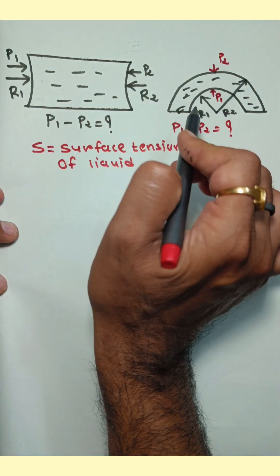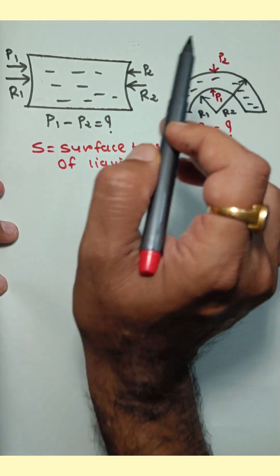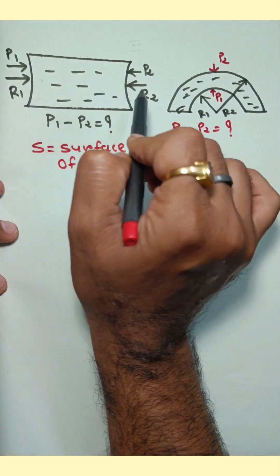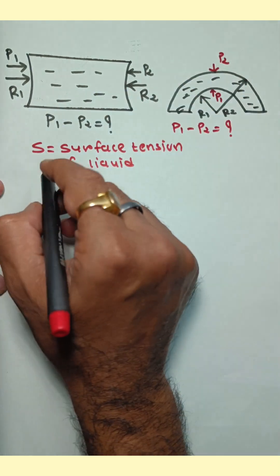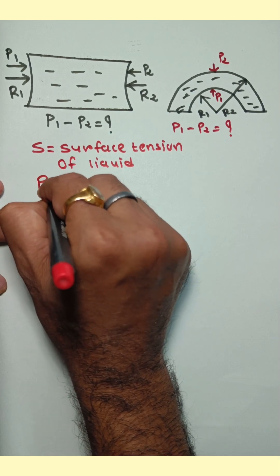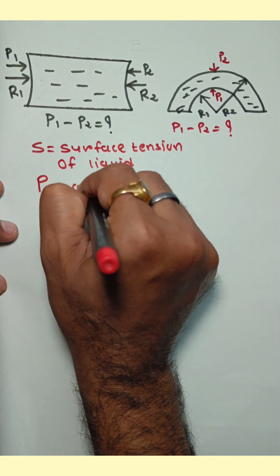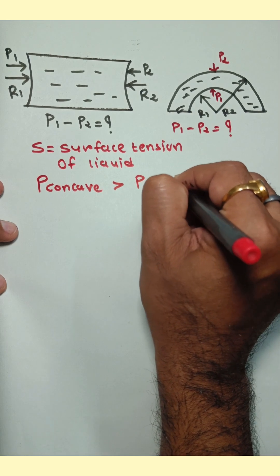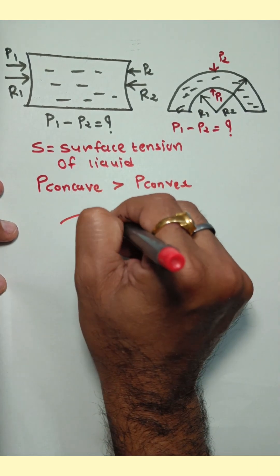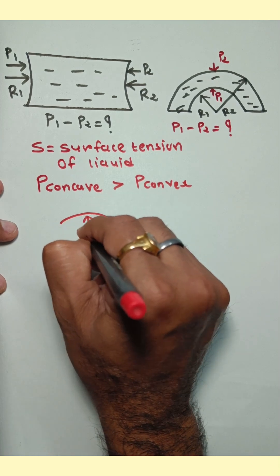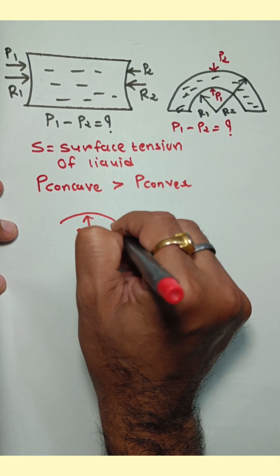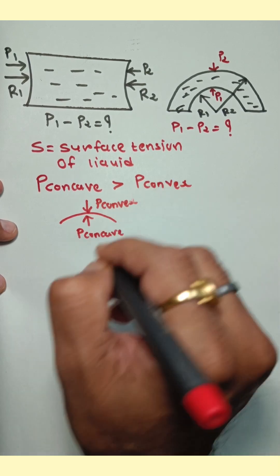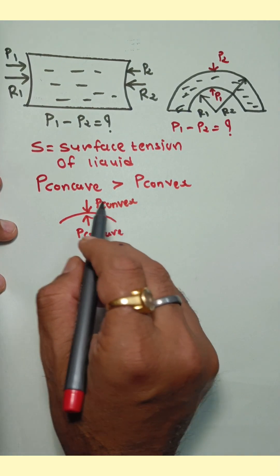Find out the P1-P2 pressure difference in both cases. Here S is the surface tension of the liquid, and R1 and R2 are the radii of curvature. The key principle is that pressure on the concave side is always greater than pressure on the convex side, so P concave is greater than P convex.